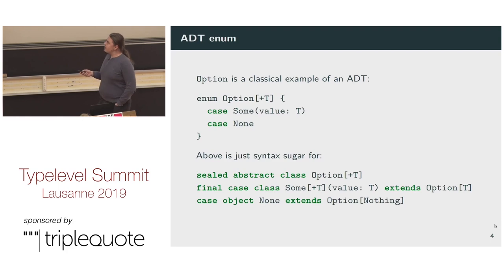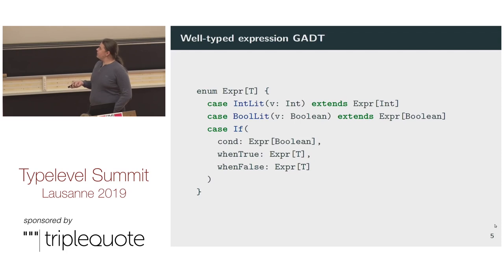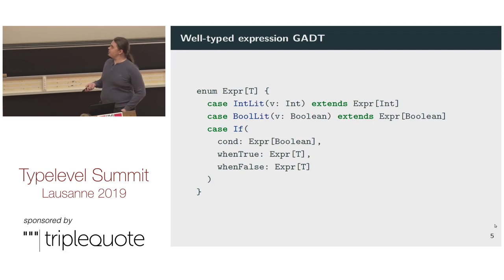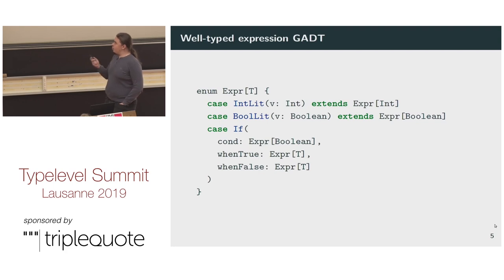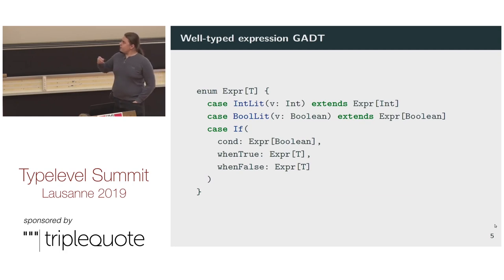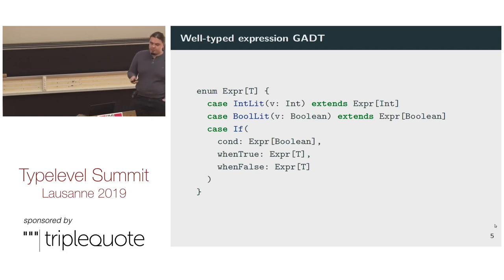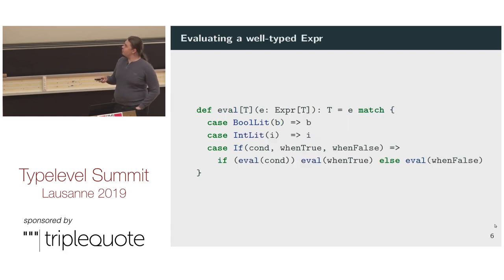If we have extends clauses, then we are dealing with a GADT. Here's the typical example: we have a well-typed expression GADT, a very simple expression tree. We have an IntLit that extends an Expr of Int, a BoolLit that does the same but for Boolean, and an If that has a condition which is always an Expr of Boolean, and two branches which are Expr of T.